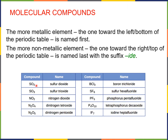So putting these rules together and adding the rules about prefixes, we can start naming our compounds. SO2 is sulfur dioxide. SO3 is sulfur trioxide. Here's one where we have a prefix on the first element: P4O10, that's tetraphosphorus decaoxide.